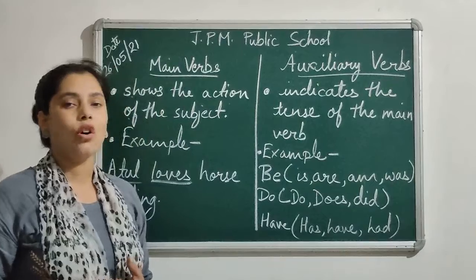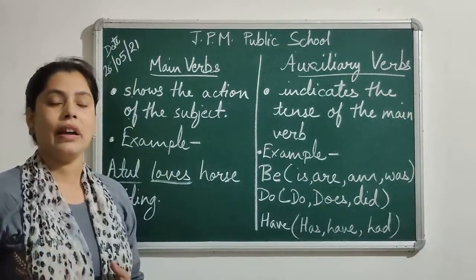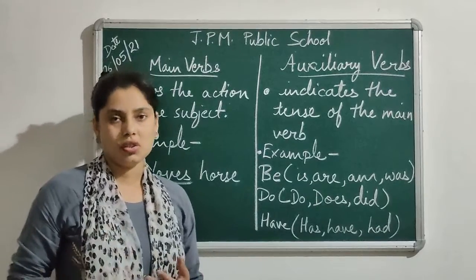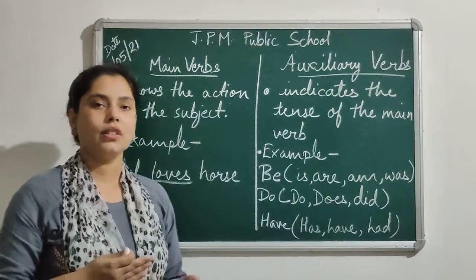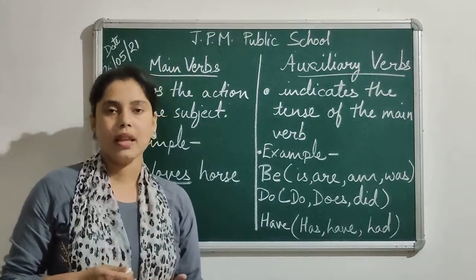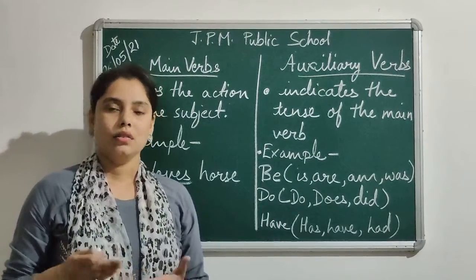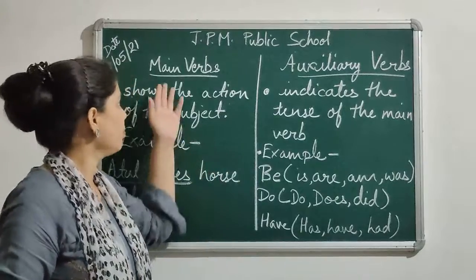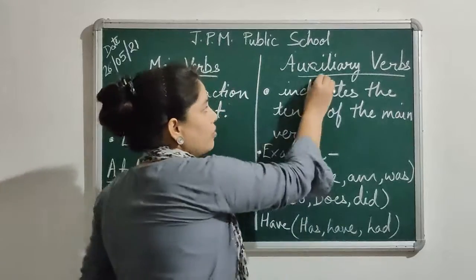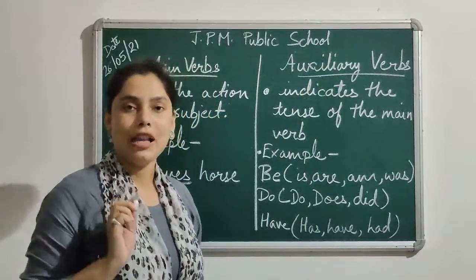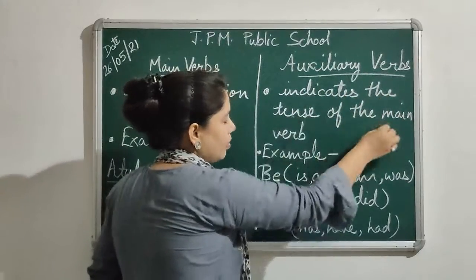Other examples of main verbs include 'give' and 'catch.' The different forms of verbs — present form and past participle forms — are all different forms of main verbs only. Now we will talk about auxiliary verbs. Auxiliary verbs are also known as helping verbs.